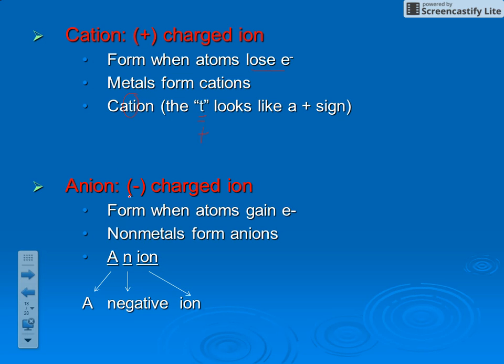Anions are ions that have a negative charge. Anions form when an atom gains electrons. If you gain electrons, you become more negative. Non-metals form anions. The way I remember anions are negative is if you look at the word anion and break it up, you can see A N for negative and the ends of the word ion - so a negative ion.